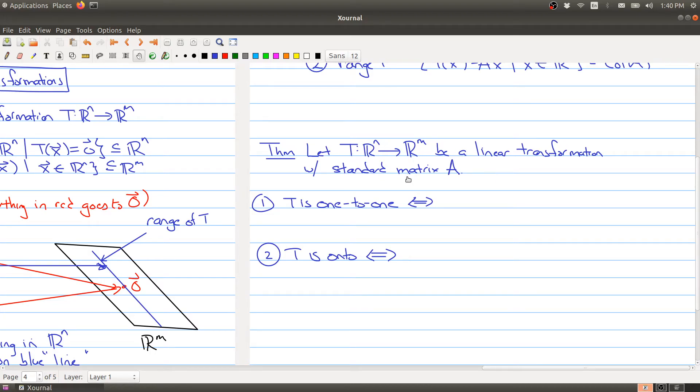So remember when we have a linear transformation, it's still a function, and functions can have the property of being either one-to-one or onto. And we can now describe the property of being one-to-one or onto in terms of the corresponding subspace. Let me write this out more precisely.